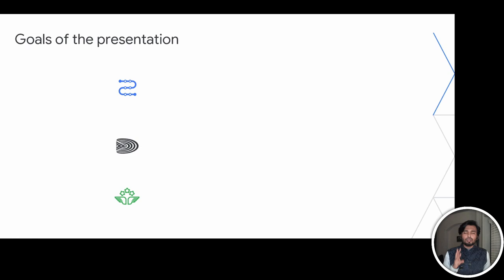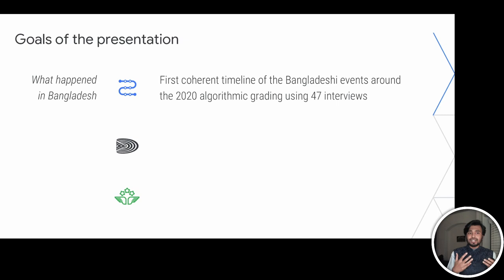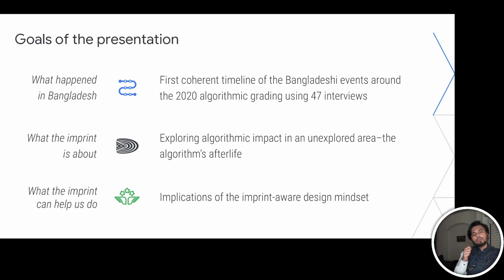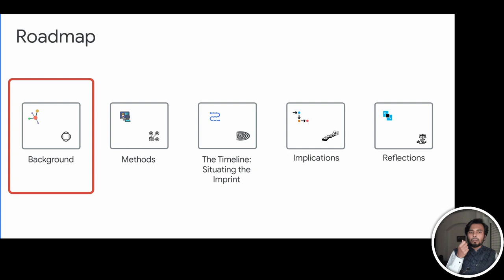By the end of this presentation, we'll learn about three things. First, what happened in Bangladesh through the first coherent timeline around the 2020 events. Second, through these events, what this algorithmic imprint is about and how it lets us explore an area we haven't had a chance to explore before — the algorithm's afterlife. Third, the implications of this and how an imprint-aware design mindset can help us. Here is the brief roadmap for the rest of the talk, and we'll start with background.